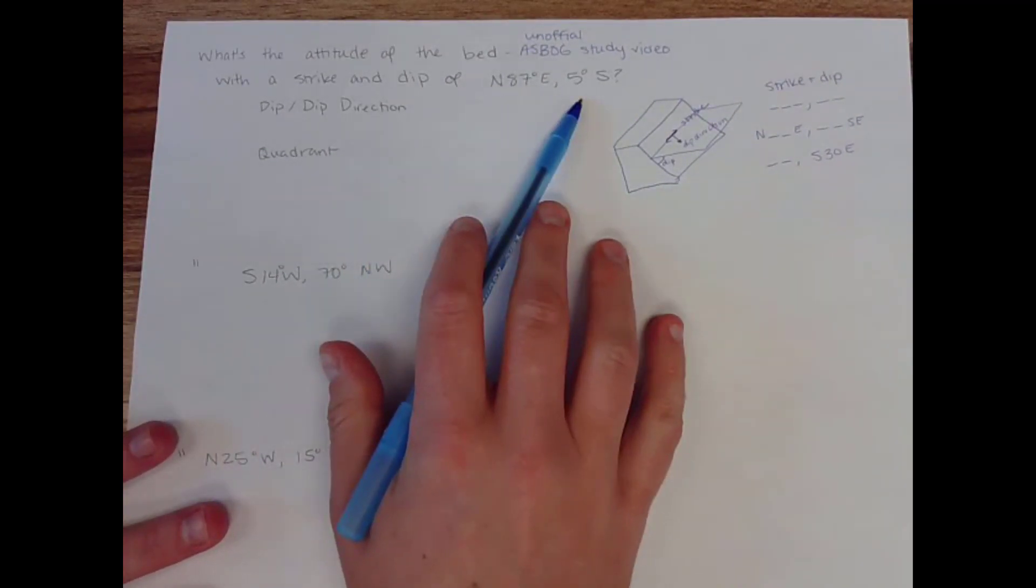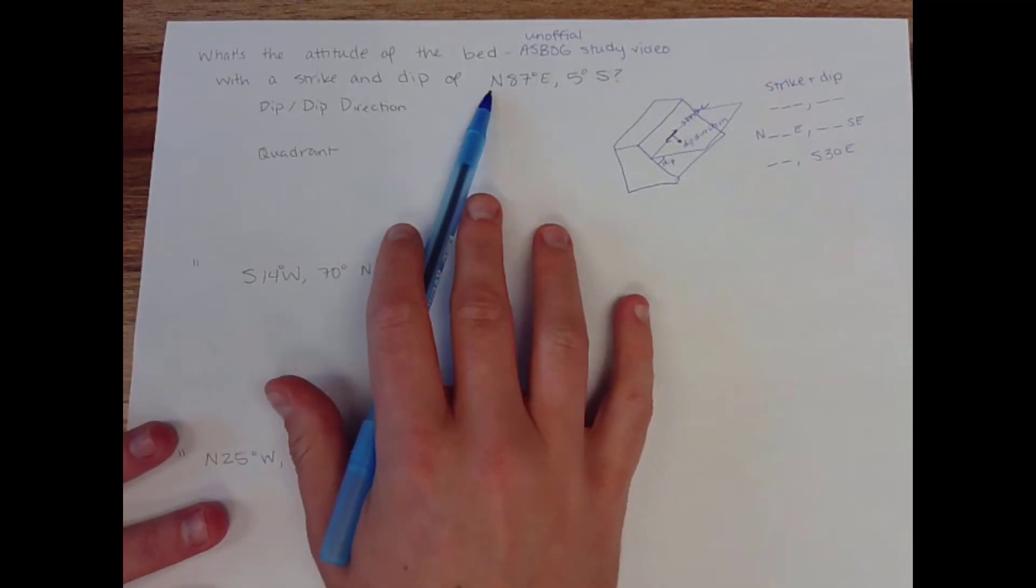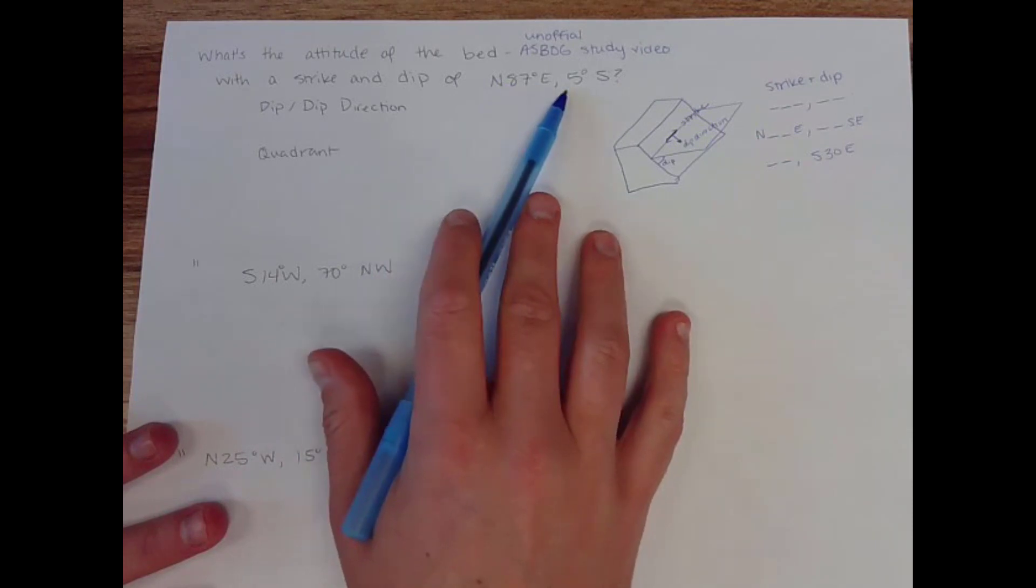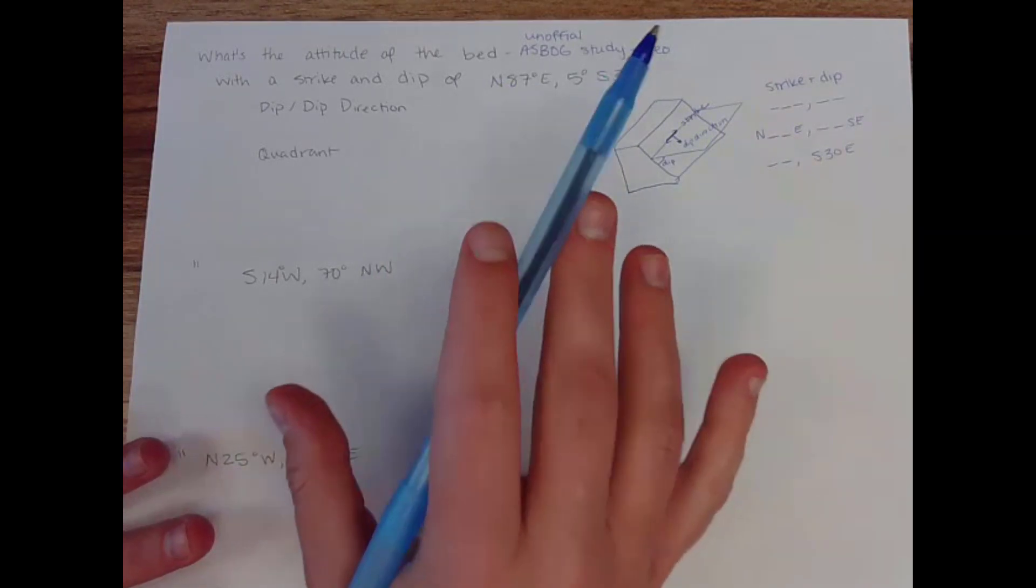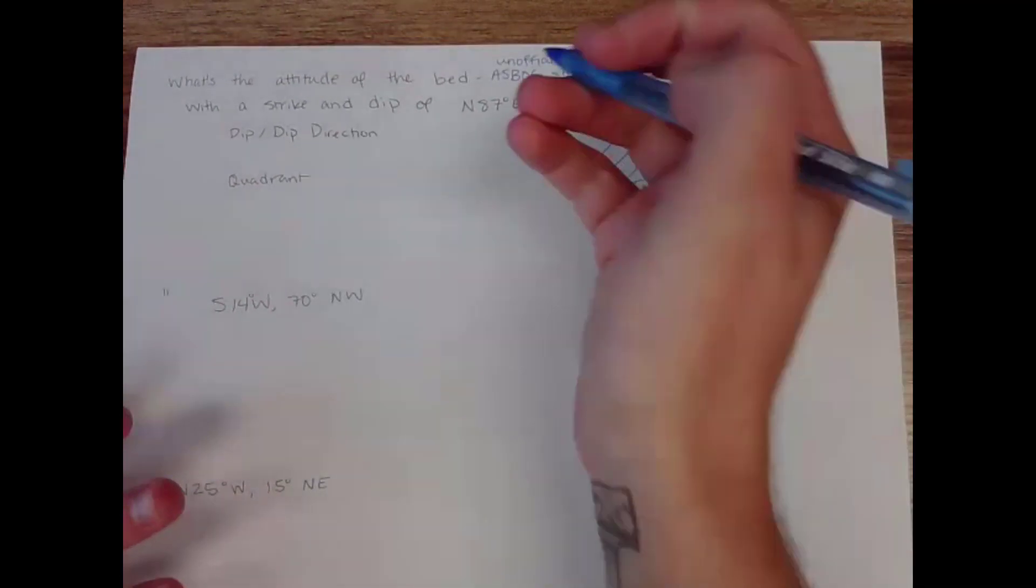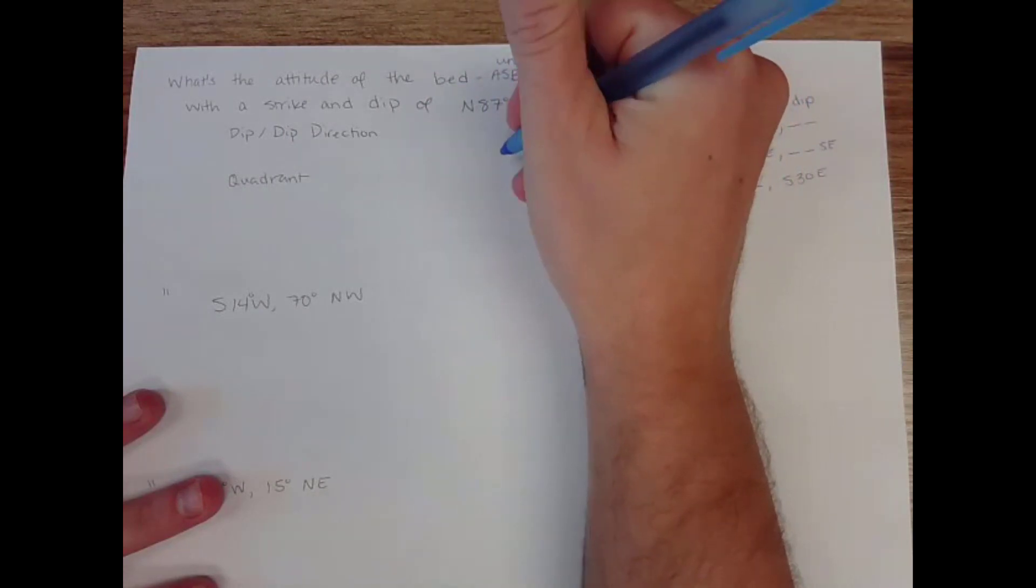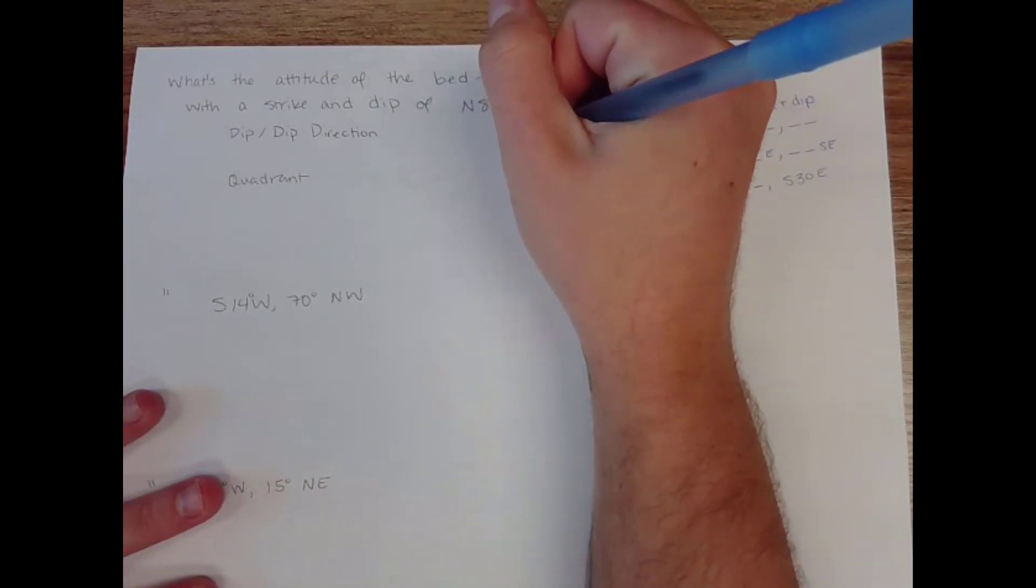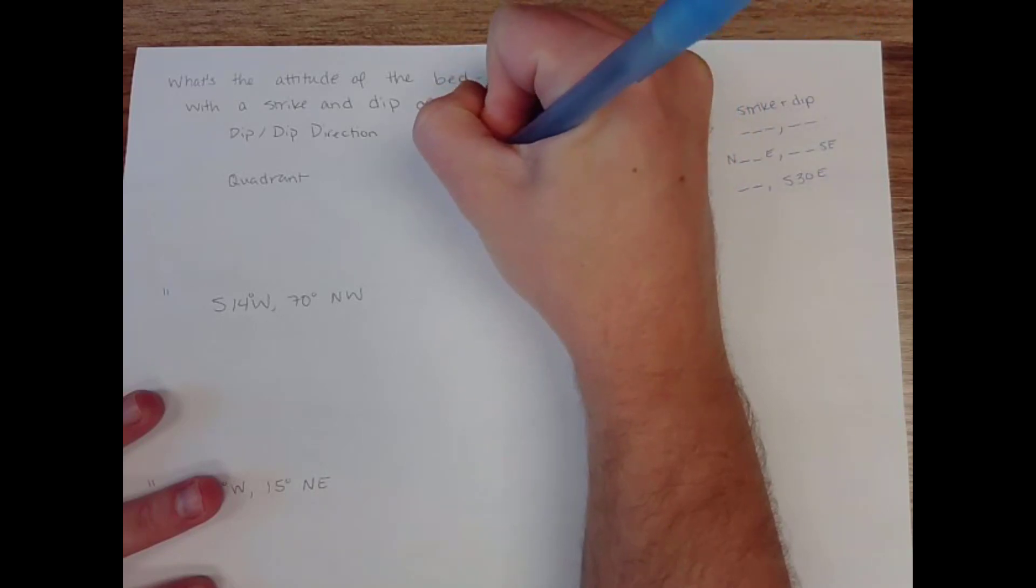So first off, I'm giving it to you in quadrant, north 87 east, five south. So what I would do first is try to visualize what that actually means. As much as I know, a lot of you probably didn't like stereo nets. Give yourself a circle